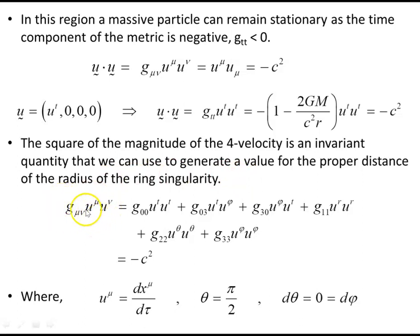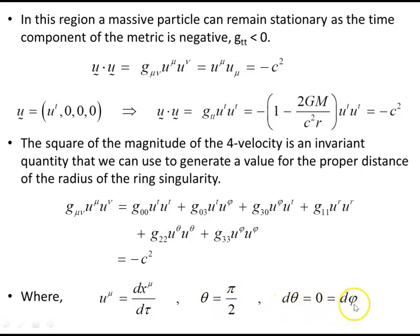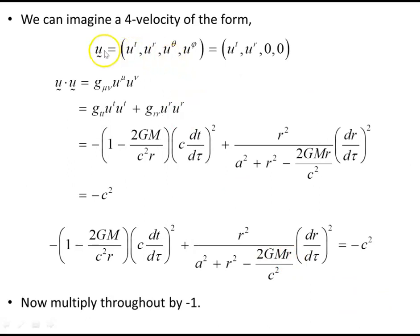Writing out the four-velocity with all components and metric terms fully expanded for the Kerr rotating black hole, we get this expression equal to −c². Here U^μ is the derivative of each coordinate with respect to proper time. Since θ = π/2, we're in the equatorial plane, so dθ/dτ = 0. We're also choosing a radial path, fixing φ, so dφ/dτ = 0. The four-velocity then has only t and r components, and writing out the magnitude squared we end up with one equation on one line equal to −c².